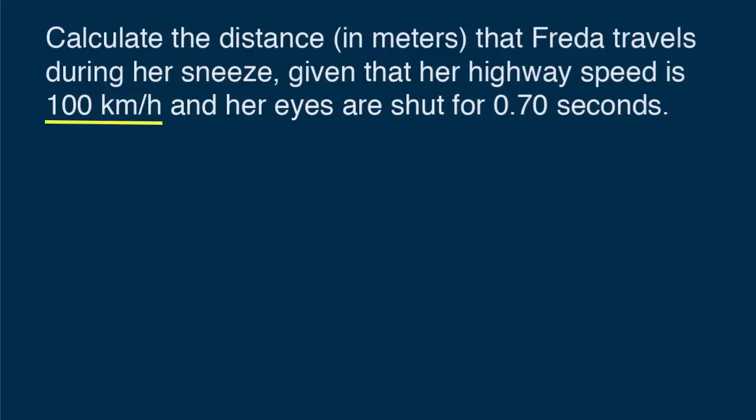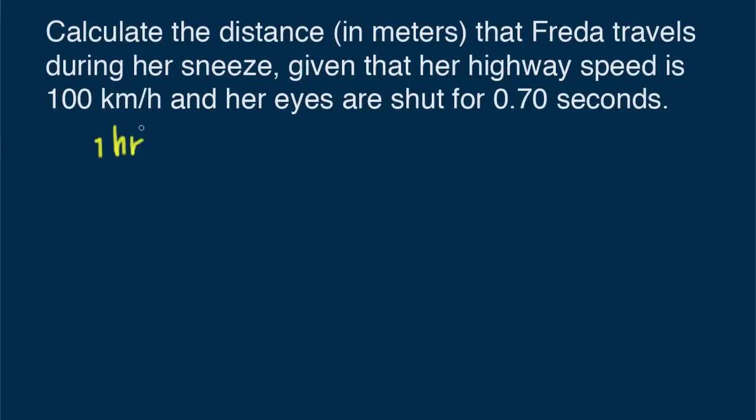We use a process called unit conversion. We set up conversion factors so that the kilometers and hours cancel, leaving us with the units meters per second. The conversion factors we need are one hour equals thirty six hundred seconds and one kilometer equals one thousand meters. Conversion factors have a numerical value of one, so multiplying a quantity by one successively doesn't change the quantity, only its units.